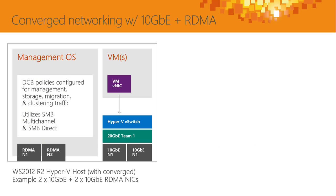Where RDMA fits in: RDMA gives us extremely fast and accelerated network performance. The additional benefit is that processing is done on the NIC itself, so the host processors feel less burden. The problem with RDMA in 2012 R2 is that it doesn't support teaming and doesn't support being bound to a V switch — therefore you lose that RDMA capability and advantage.